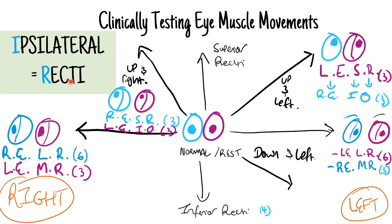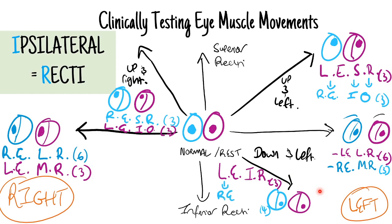Down and left: start with the ipsilateral left eye - looking downwards, so that's your inferior rectus. The opposite for the right eye: superior becomes inferior → superior, and rectus becomes oblique. So your right eye is testing the superior oblique - your trochlear nerve. Remember, the superior oblique makes your eye look downwards.